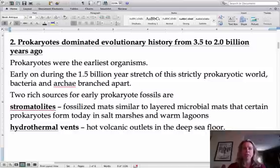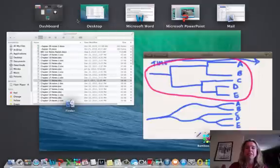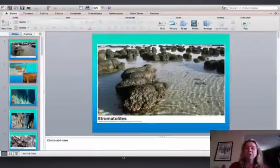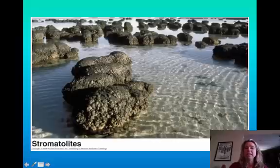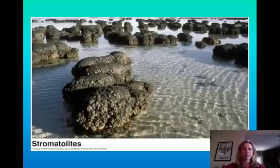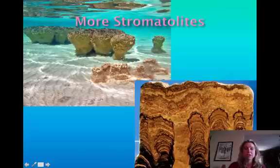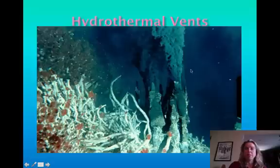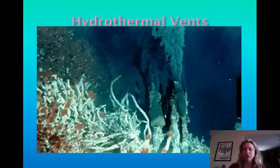A lot of people ask where you find fossils of bacteria. There are two main sources. The first is stromatolites — microbial mats that form, with new ones growing on top, compacting until they become rock. If you look at the picture, you can see stromatolites cut through to reveal all those layers. Another place where they've found bacterial fossils is around hydrothermal vents — deep-ocean features almost like underwater volcanoes.